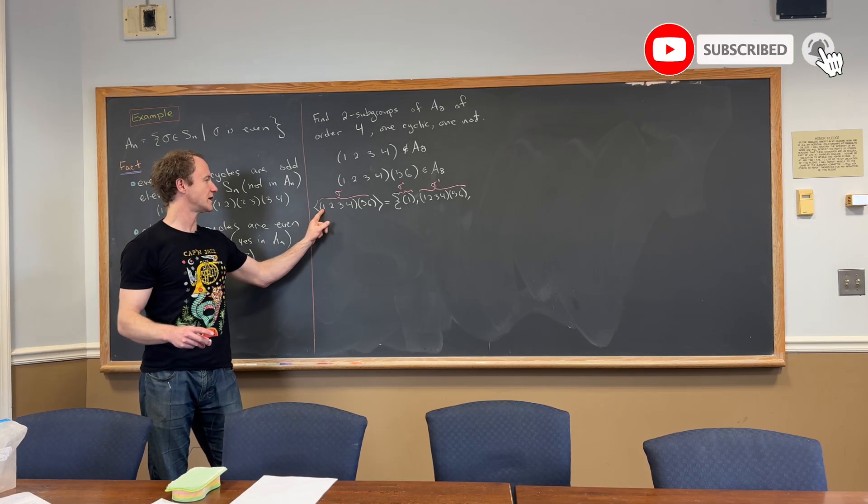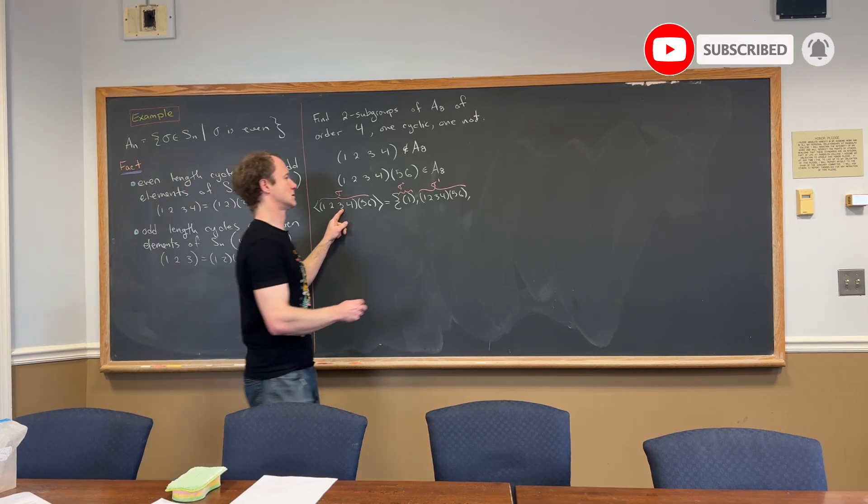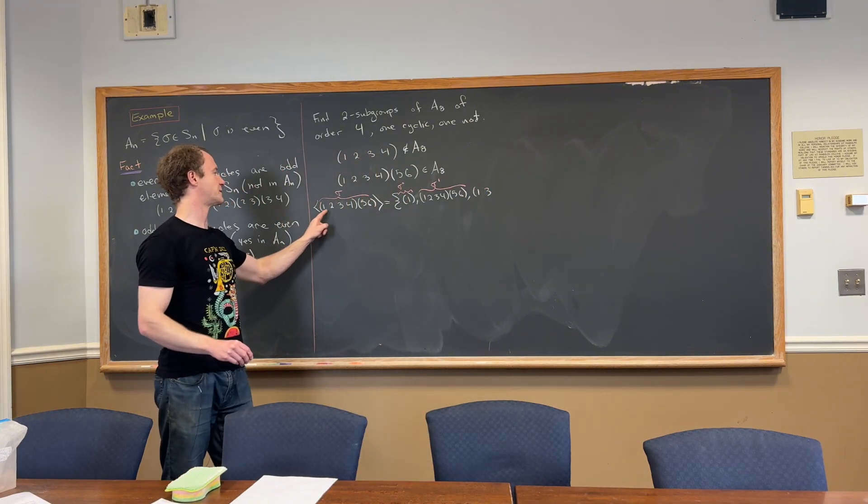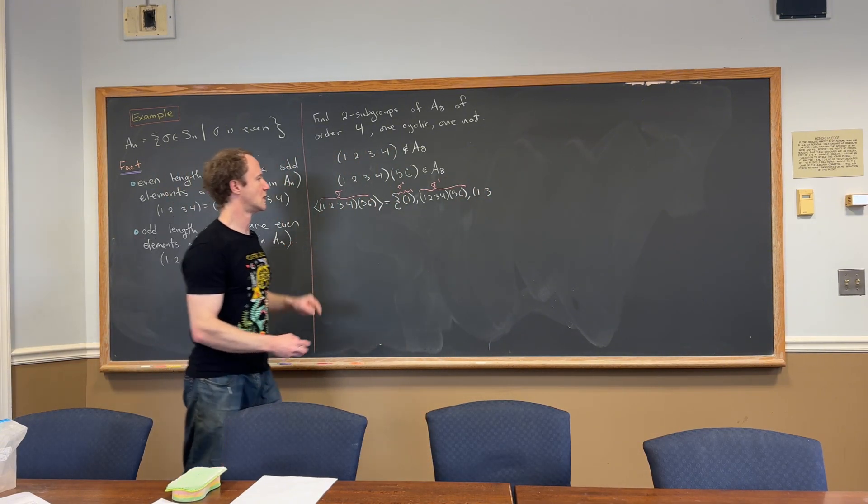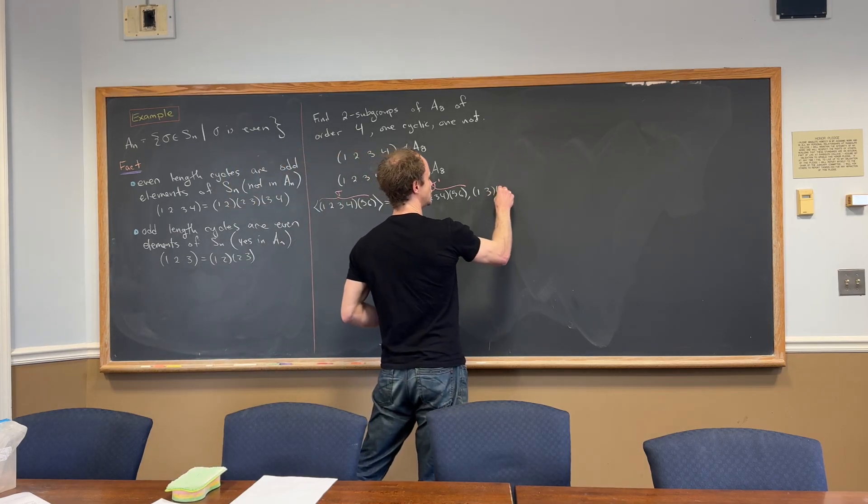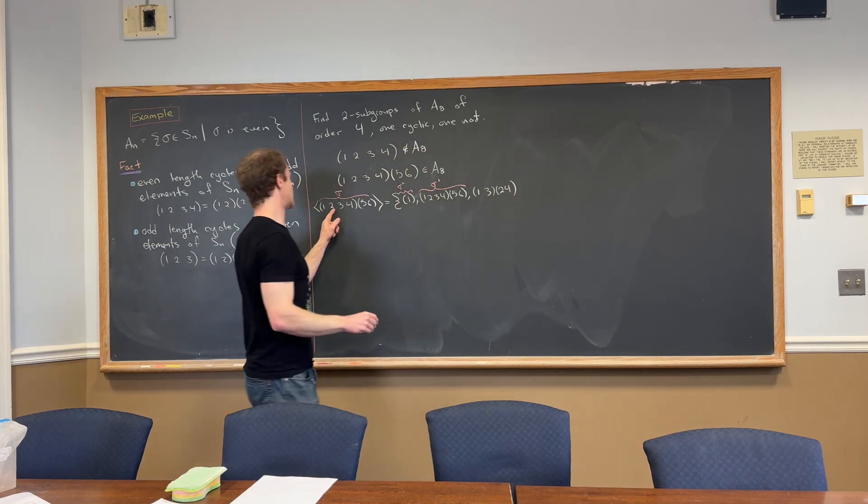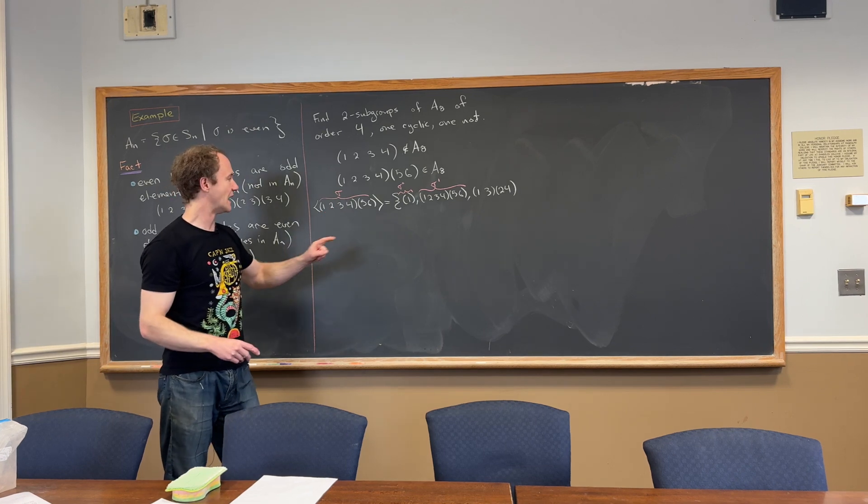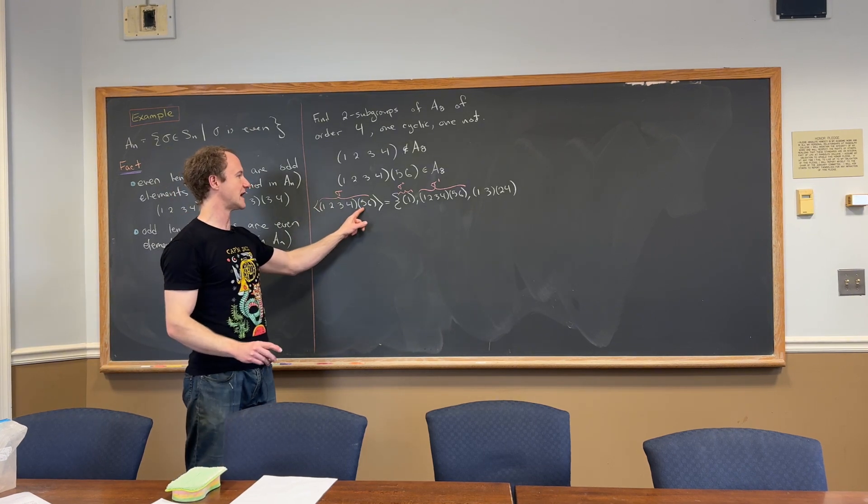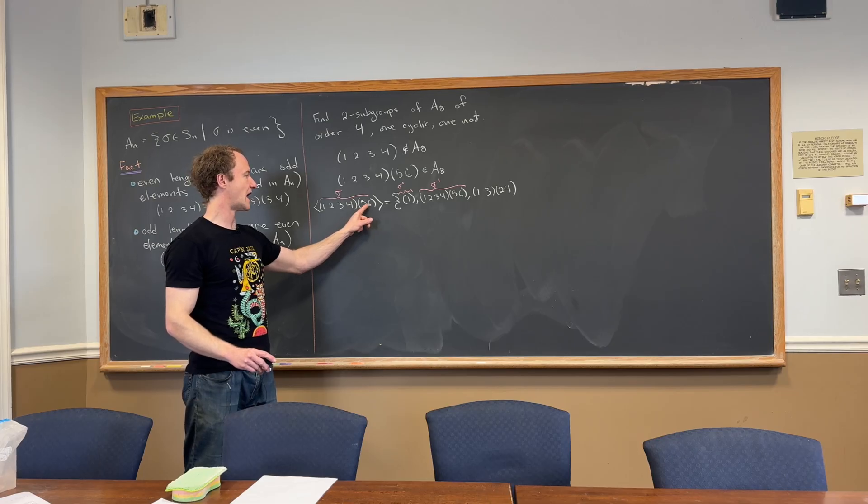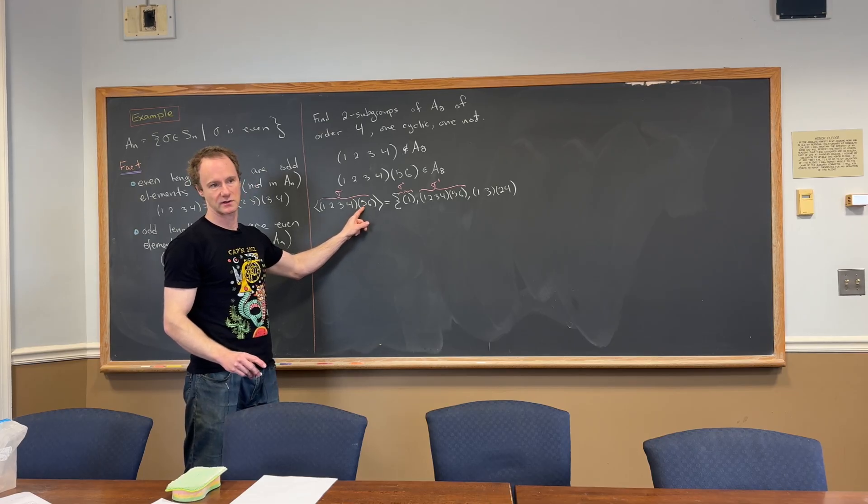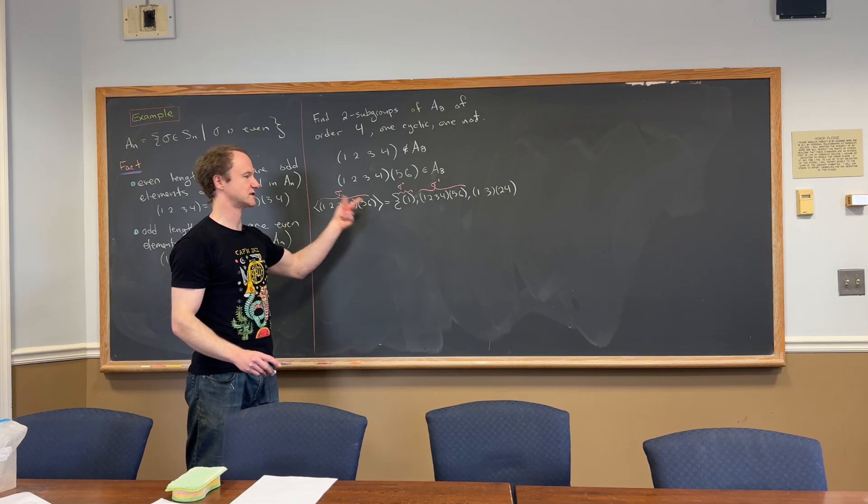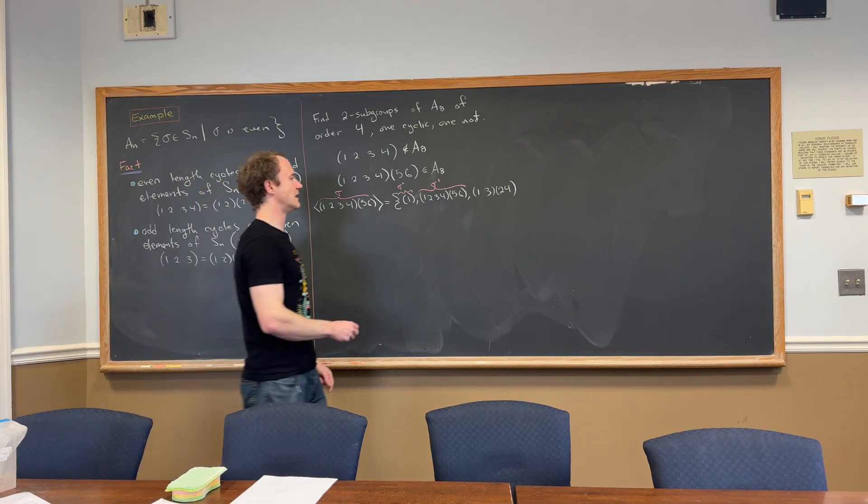So we go 1 goes to 3. So 1 goes to 3. And then 3 goes back to 1. And then likewise, 2 will go to 4. So 2 goes to 4. 4 goes back to 2. So we just count through two at a time. And then nominally, we do that here too. So 5 goes to 5, because we just count through two at a time. But it's not that long. 6 goes to 6. It's the same thing.